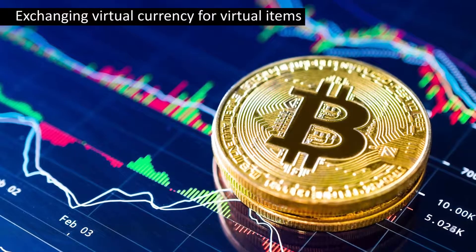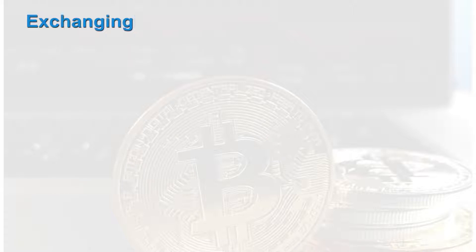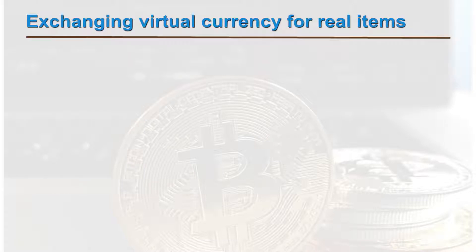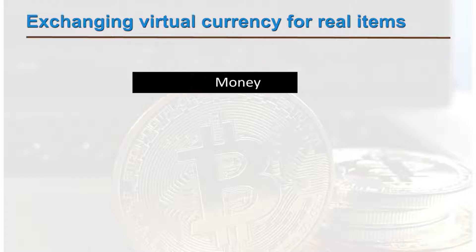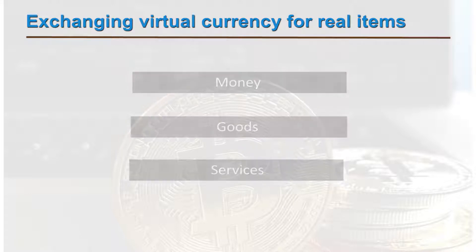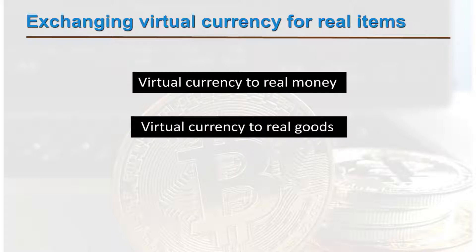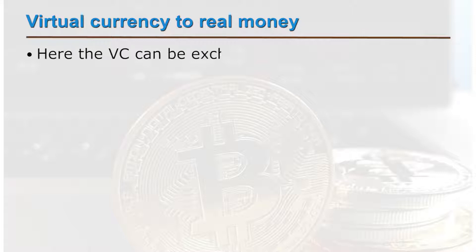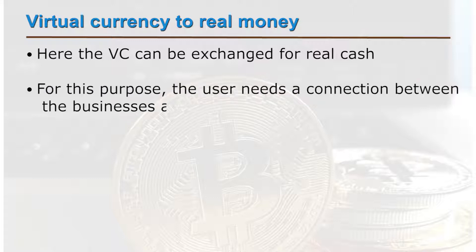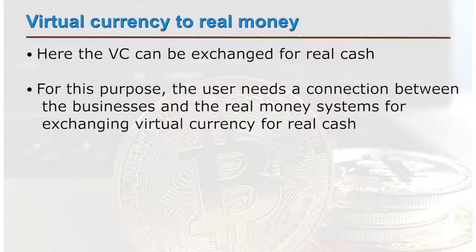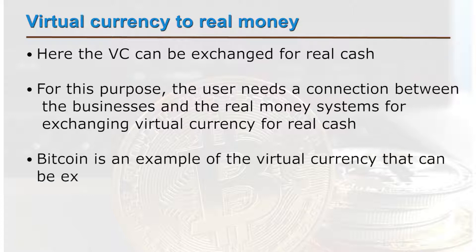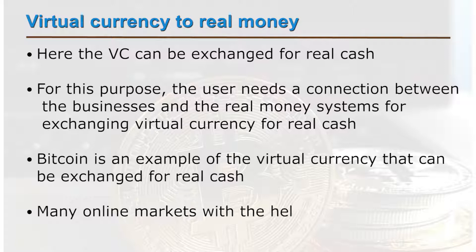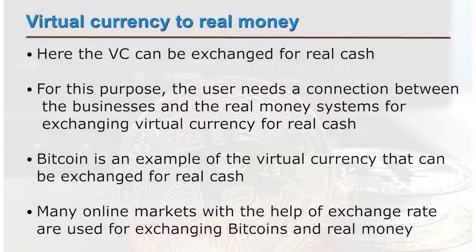Bitcoins are used as virtual currencies for buying virtual items. The second category is exchanging virtual currency for real items, which may include money, goods, and services — virtual currency to real money, virtual currency to real goods, and virtual currency to services. In the virtual currency to real money form, the virtual currency can be exchanged for real cash. The user needs a connection between the business and the real money systems for this exchange. Bitcoin is an example of virtual currency that can be exchanged for real cash, and many online markets use exchange rates to convert bitcoins to real money.